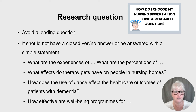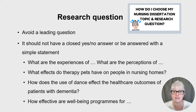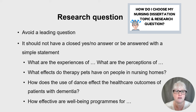Your first hurdle is to formulate a research question — a searchable, researchable research question. A key tip is to avoid a leading question; it should not have a closed yes/no answer. For example, 'Do prophylactic anticonvulsants decrease the risk of seizures in patients with brain surgery?' — the answer is yes, and it's already answered in the medical literature. You should be looking at questions that are unbiased and open, such as: 'What are the experiences or perceptions of a certain group?' or 'What effects do therapy pets have on people in nursing homes?'